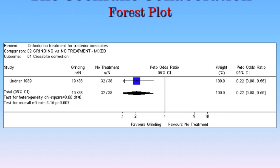We have an odds ratio here of 0.22. But actually the true value — if we were to take another sample — may be higher, perhaps 0.3 or 0.4, or it may be lower, down to 0.1 or less. So we know the true value is somewhere along this confidence interval line. Importantly, you can see that this confidence interval does not cross the line of no difference — it does not cross a value of 1. So we are fairly confident that the data show a statistically significant difference between the grinding group and the non-grinding group.